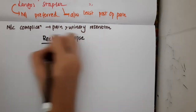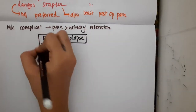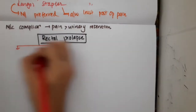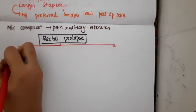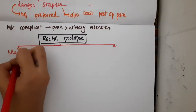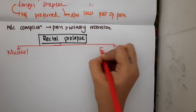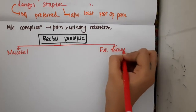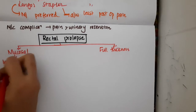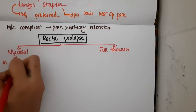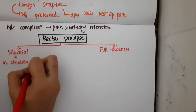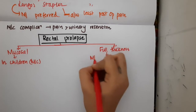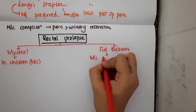Rectal prolapse is actually of two types. We have mucosal rectal prolapse and full thickness rectal prolapse. Mucosal rectal prolapse is most commonly seen in children, whereas full thickness rectal prolapse is most commonly seen in adults.